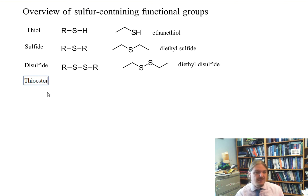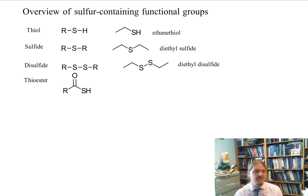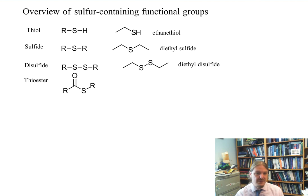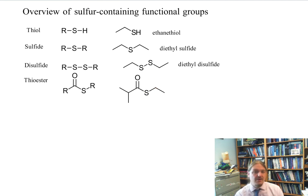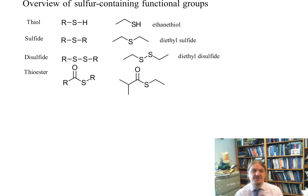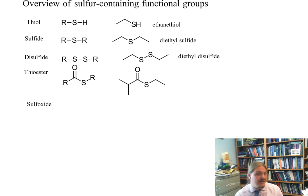The thioester is an analog of an ester where one oxygen atom has been replaced by a sulfur. The remainder of the functional groups I'm going to talk about all contain sulfur in higher oxidation states — that is, sulfur with bonds to oxygen. Here's an example with one sulfur-oxygen bond: the sulfoxide functional group.